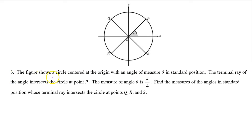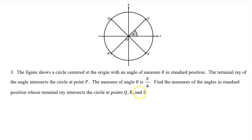Number 3. The figure shows a circle centered at the origin with an angle of measure theta in standard position. The terminal ray of the angle intersects the circle at point P. The measure of angle theta is pi over 4. Find the measures of the angles in standard position whose terminal ray intersects the circle at points Q, R, and S. Since point P is at pi over 4 radians, points Q, R, and S are at multiples of pi over 4.